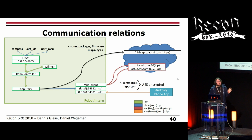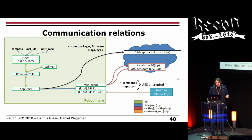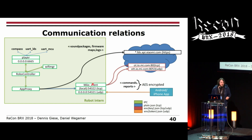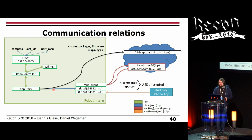Looking at the communication architecture: the most central component of the vacuum cleaner is the MIIO client, which creates a connection to the cloud. All internal components connect to the MIIO client, which works as a proxy or forwarder of messages. The outside communication is encrypted, but internally all communication is unencrypted JSON, which makes development very easy.